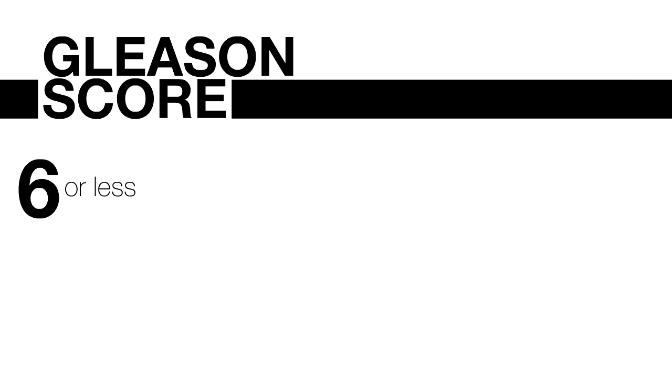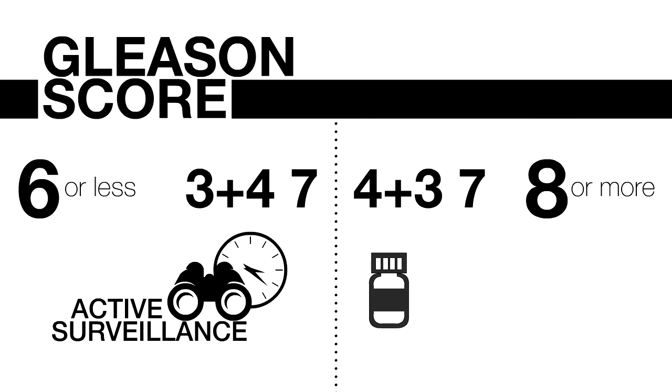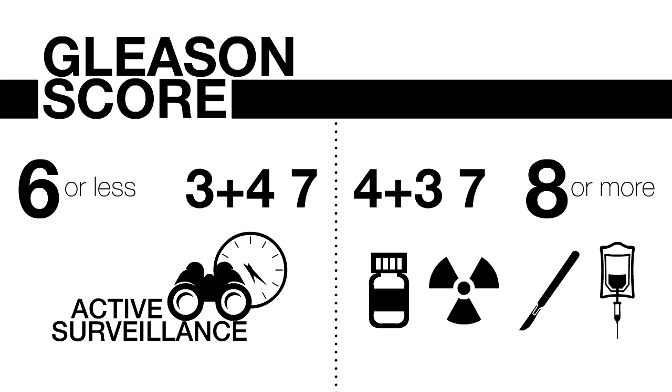In general, a Gleason score of 6 or less, or a 3 plus 4 7, are going to require active surveillance. A 4 plus 3 7 and scores above 8 are going to require some form of hormone therapy, radiation, surgery, or chemotherapy.